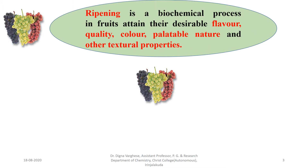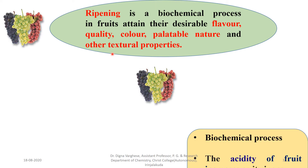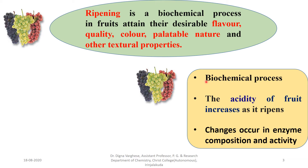Ripening is a biochemical process in fruits by which they attain their desirable flavor, quality, color, palatable nature and other textural properties. During ripening, the acidity of the fruit increases as it ripens, and there are changes in enzyme composition and activity.